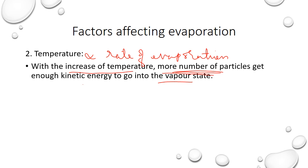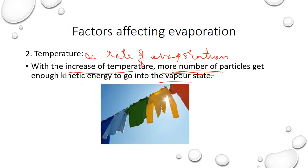Taking the example of drying clothes again — this one example can be used throughout to explain all the factors. Whenever we are drying clothes, they dry faster if it is a sunny day. Clothes dry faster on a sunny day because the temperature is high, particles get enough kinetic energy, and they get evaporated.